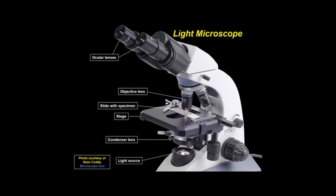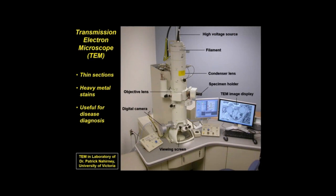The basic light microscope has a light source below, a condenser lens, a stage for the slide, objective lenses, and ocular lenses. Electron microscopes, on the other hand, use a source of electrons, which have a shorter wavelength than light, and provide greater resolution. Ultra-thin sections are cut from plastic-embedded tissues after staining with heavy metals, and images are produced in black and white, not color.